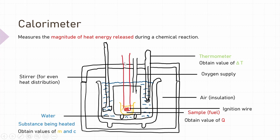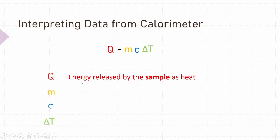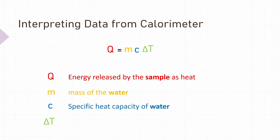In this example, Q is the energy released by the sample as heat — this is the variable of interest being calculated. m is the mass of water, which is weighed before the experiment begins. c is the specific heat capacity of water, which is usually obtained from literature rather than by measuring it ourselves. ΔT is the temperature change of water during the combustion reaction.